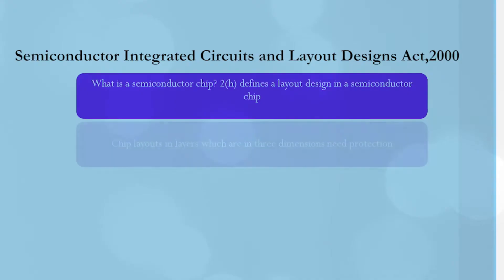These chips have transistors and nodes and they act in binary as ANDs and NOTs. To protect such layout designs, you need some specific intellectual property protection. You can think of patents, existing forms of industrial designs, or copyright, but these have largely proven not protective or are over-protective of semiconductor chip designs. Chip layouts in layers have three-dimensional properties and are spatial representations, and hence it is difficult to fit them into current forms of IP protection.